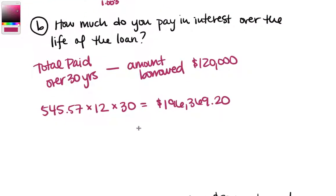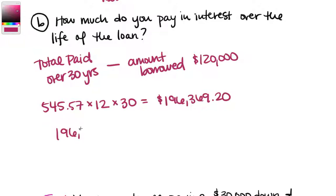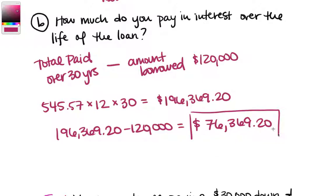So now we subtract off that $120,000, and what we get is $76,369.20. And there is our interest. So it's perfectly reasonable to take out a mortgage to buy a house. Most people don't have six figures out of pocket to just pay. But we need to realize you're paying a lot in interest. So this is a very reasonable house, reasonable mortgage rate, and you're still paying $76,000 in interest.